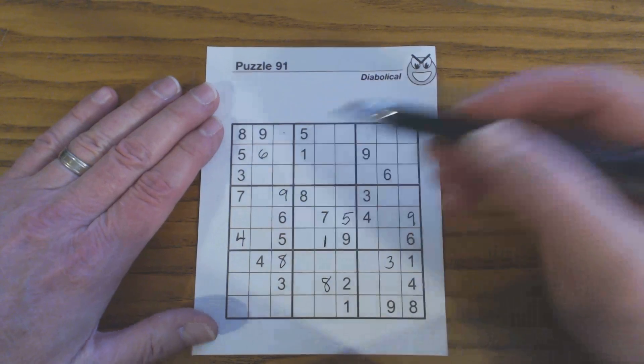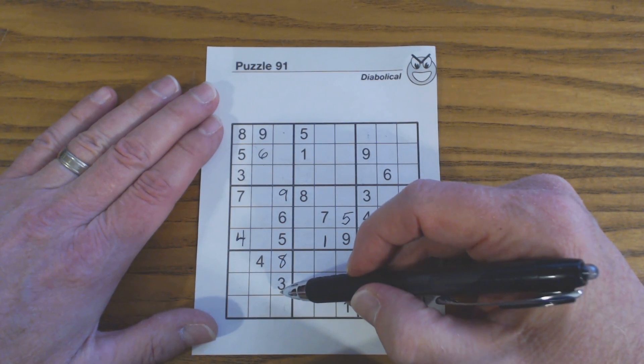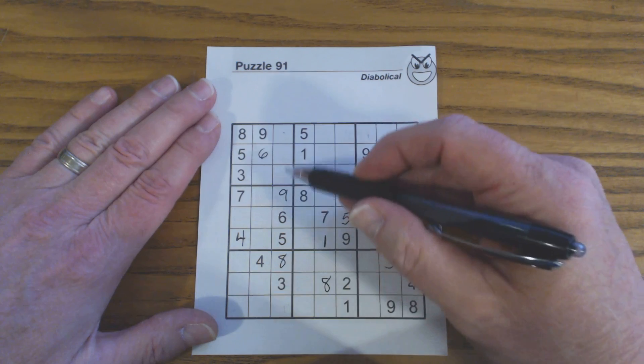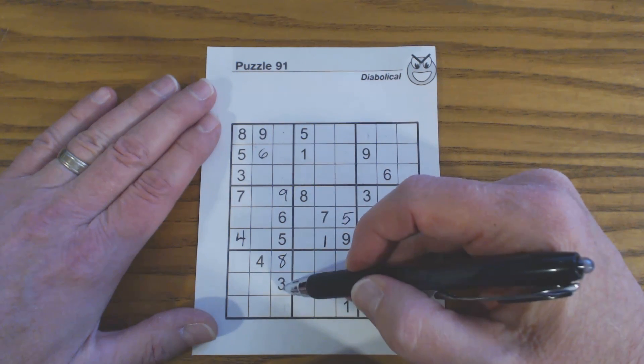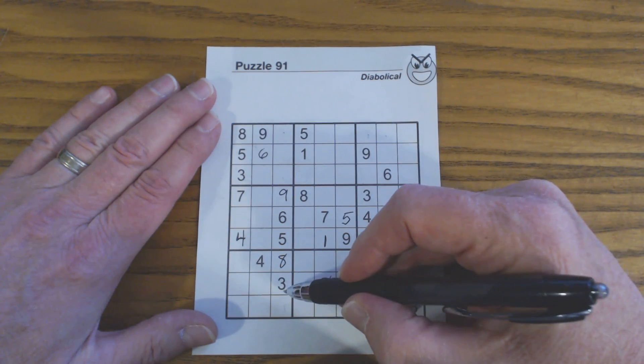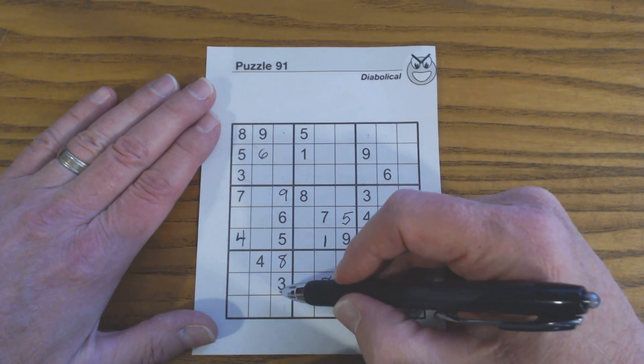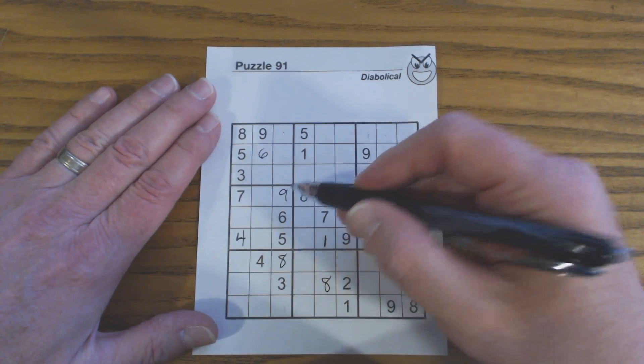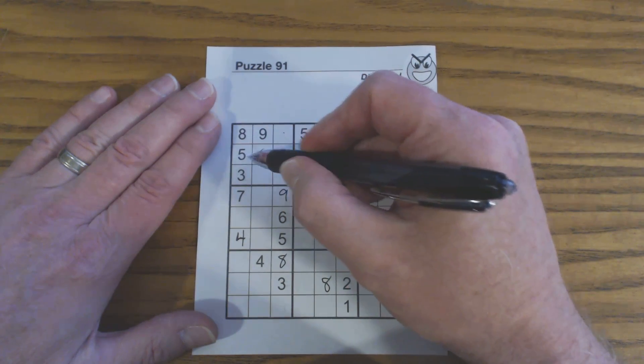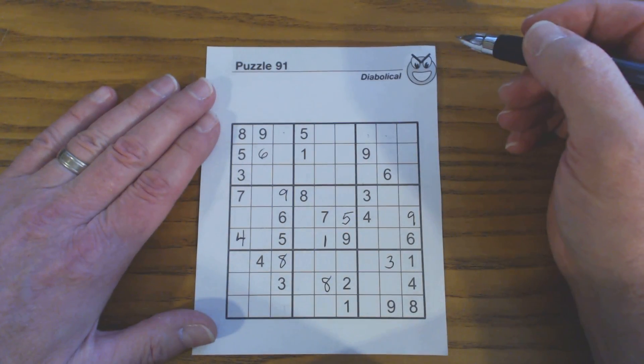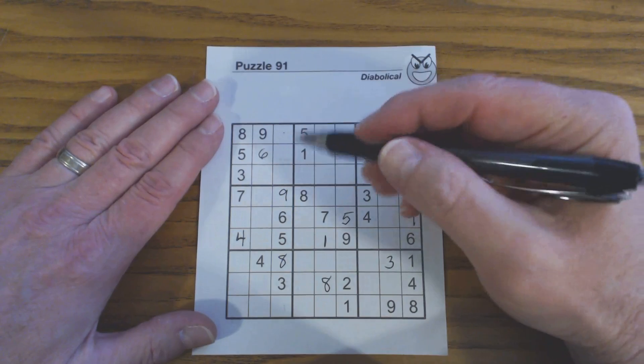When you see a loner cell like that, you can look at the numbers outside the square that are in this column or the given column or row and see if you can find one that's not already in the square. So in this case, 3, 8, 5, 6, 9, they're already all in there.